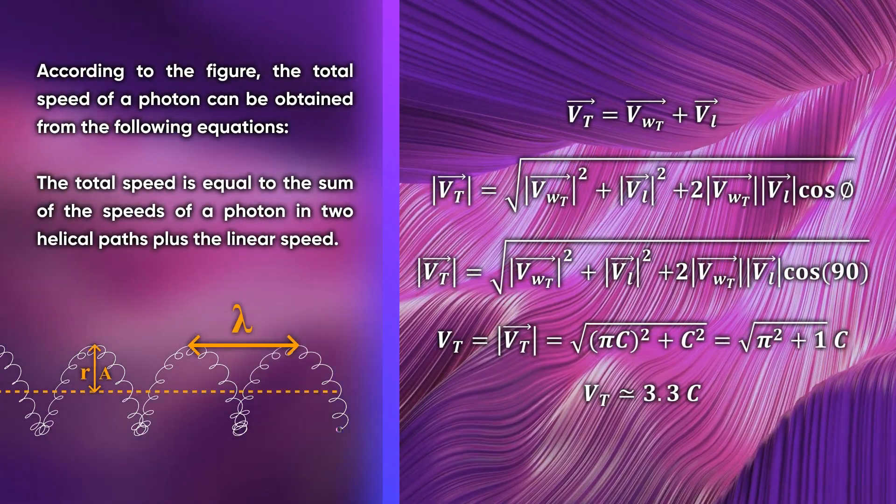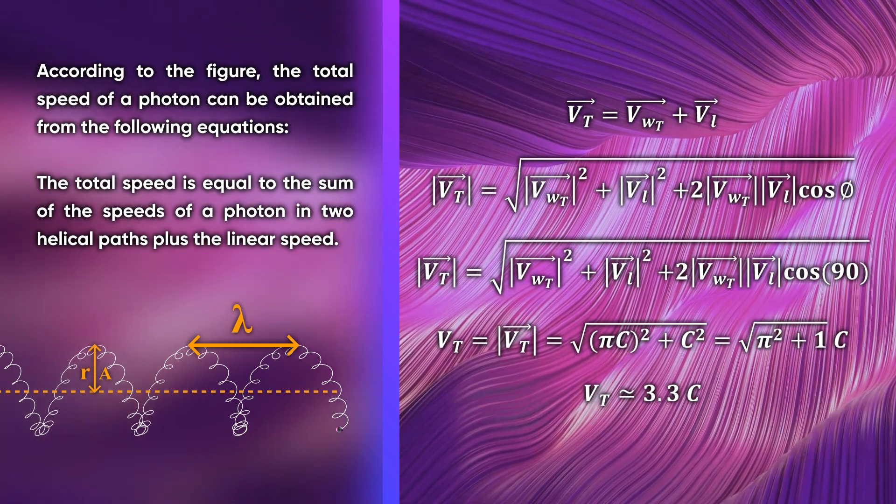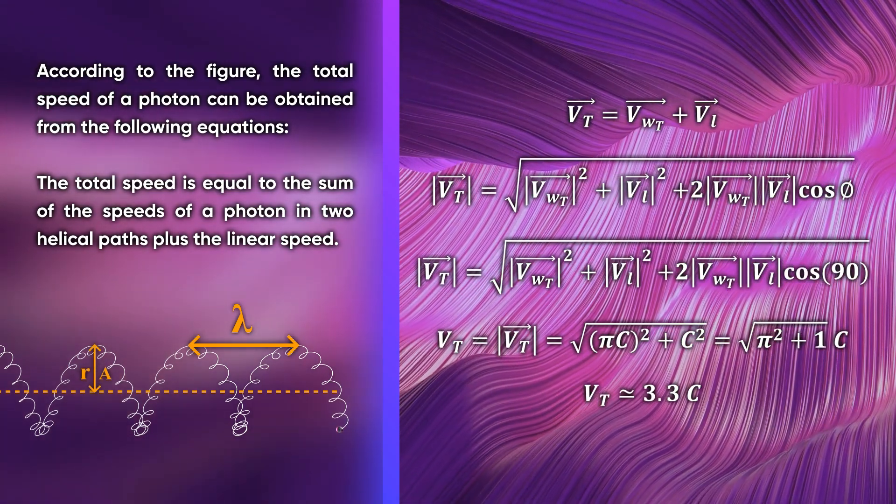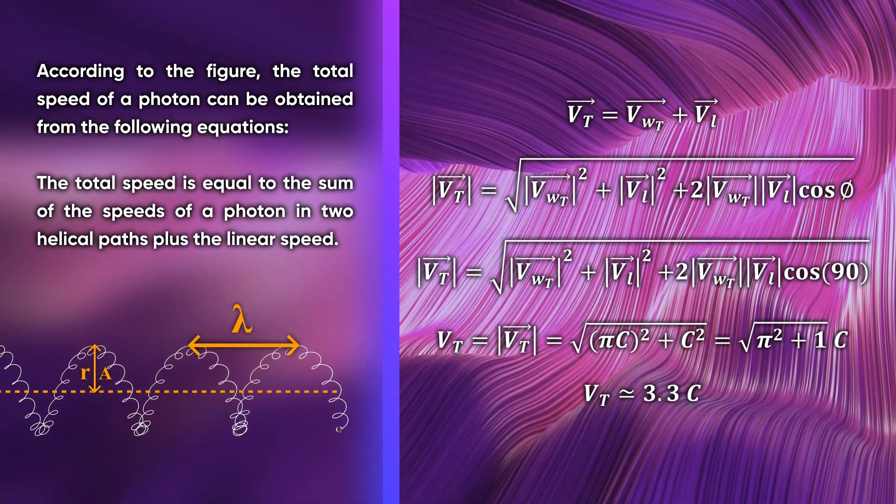According to the figure, the total speed of a photon can be obtained from the following equations. The total speed is equal to the sum of the speeds of a photon in two helical paths plus the linear speed.